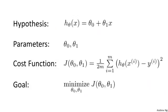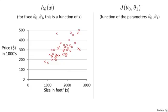Here's our problem formulation as usual with the hypothesis, parameters, cost function, and our optimization objective. Unlike the last video, I'm going to keep both of my parameters theta zero and theta one as we generate our visualizations for the cost function. Same as last time, we want to understand the hypothesis h and the cost function j.